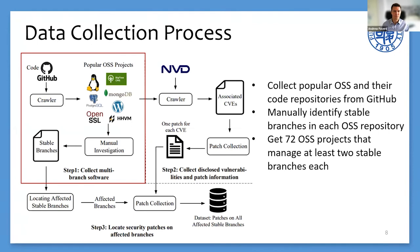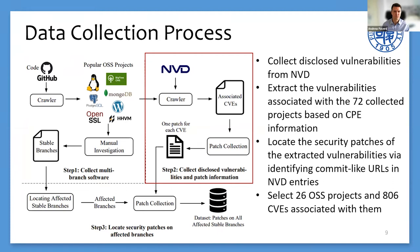To address these two challenges, we paid great efforts to collect data and construct our dataset. As shown in the figure, we follow three steps. In the first step, we collect popular OSS from GitHub and manually identify stable branches in each OSS repository. At this step, we get 72 OSS projects that manage at least two stable branches. In the second step, we collect disclosed vulnerabilities from NVD and locate the assets to create patches while identifying commit-level URLs. By filtering projects with few vulnerabilities and patches, we select 26 OSS projects and 806 associated CVEs.